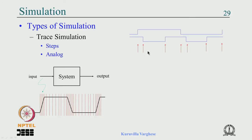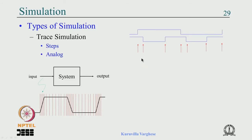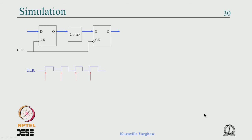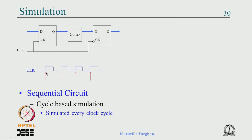The simulator needs to do computation only when a signal changes — this is called event-driven simulation. A new event triggers computation; events can be on inputs or internal signals. For sequential circuits updated every clock cycle, simulation can be done on the active clock edge, which is a very fast way of simulating.